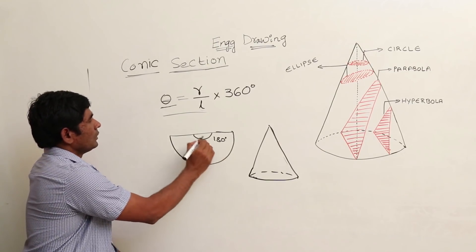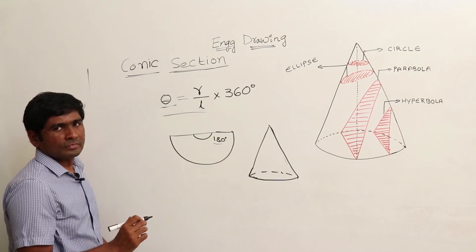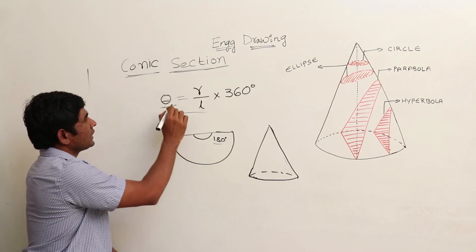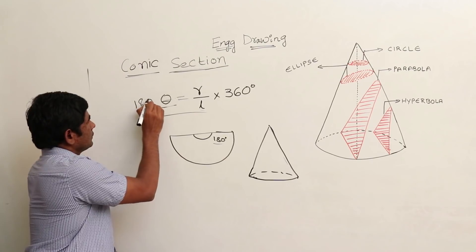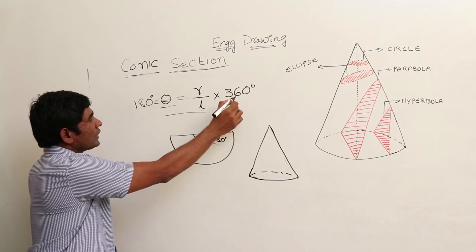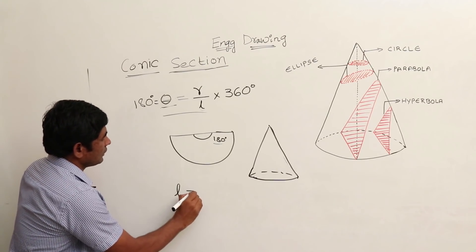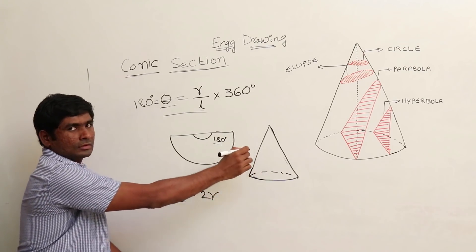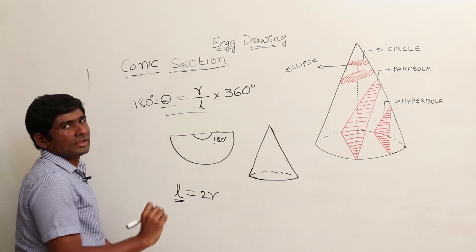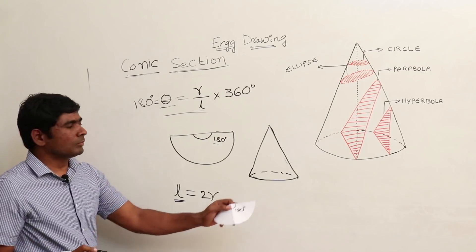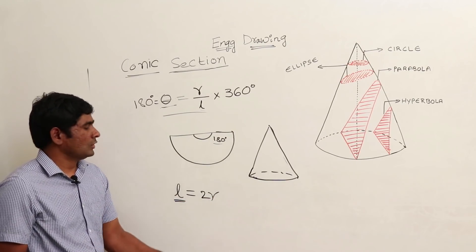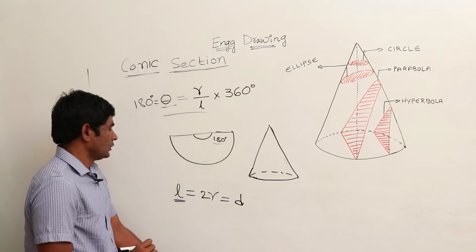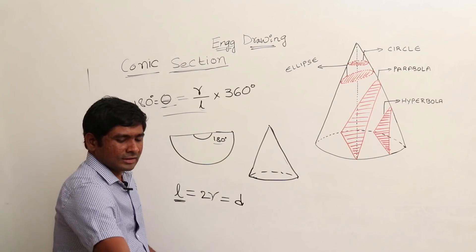Theta is given as 180 degrees. If I substitute this theta value in the equation theta equal to r by l into 360, the 360 and 2 will cancel, and finally we get L equal to 2R. Here L is the lateral surface length, R is the base circle radius of the cone, and 2R is nothing but the diameter. So finally we got L equal to D.